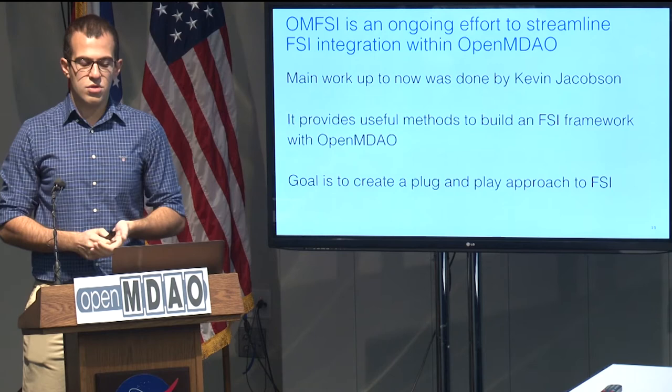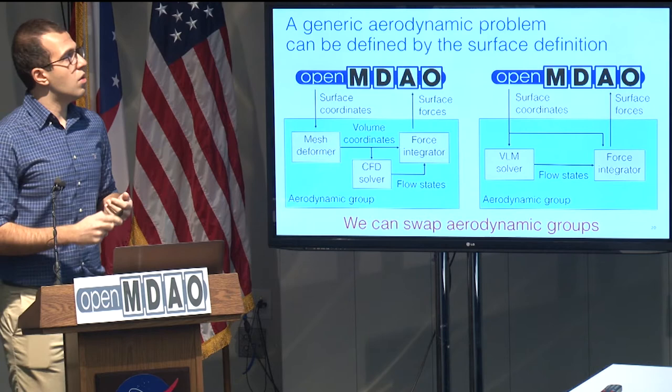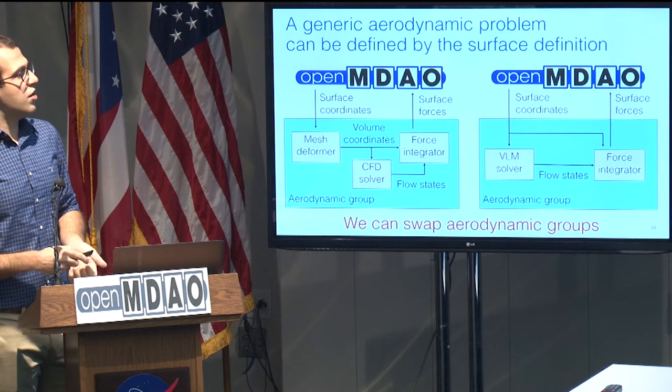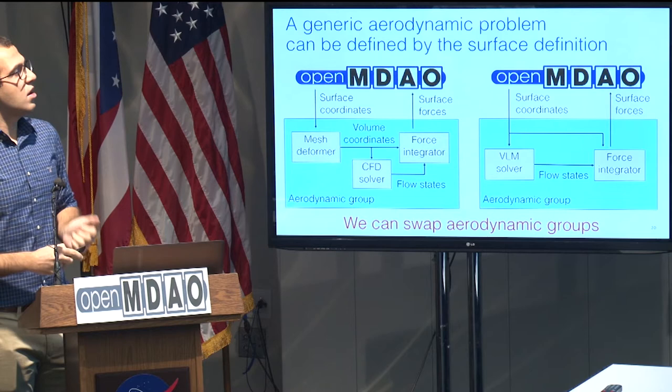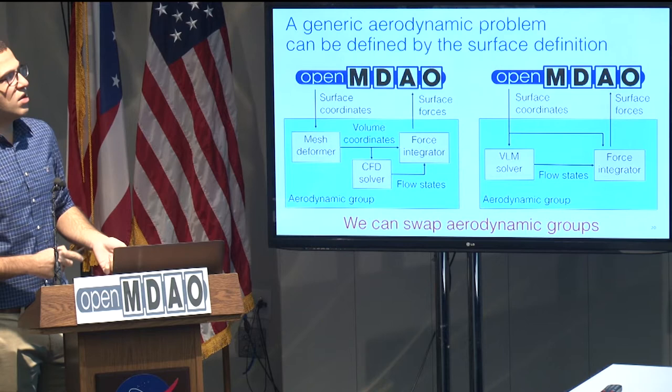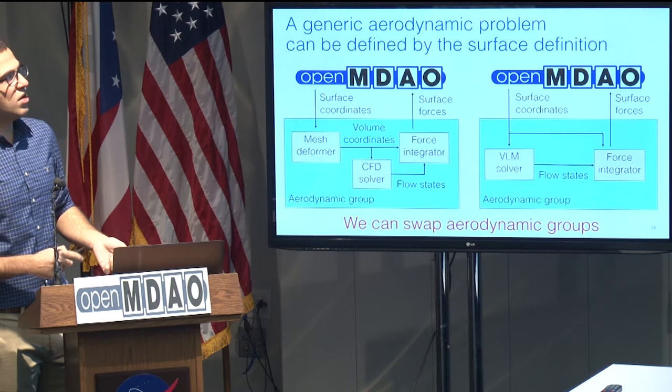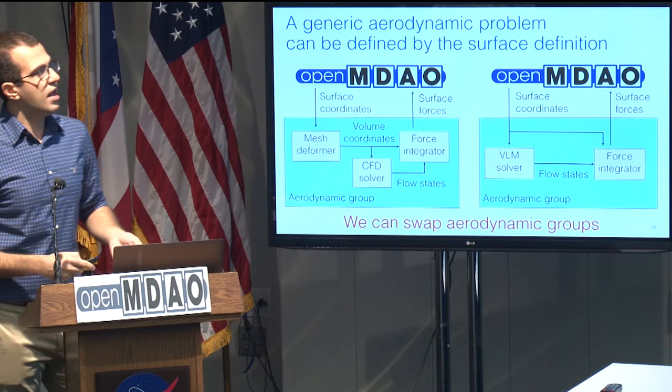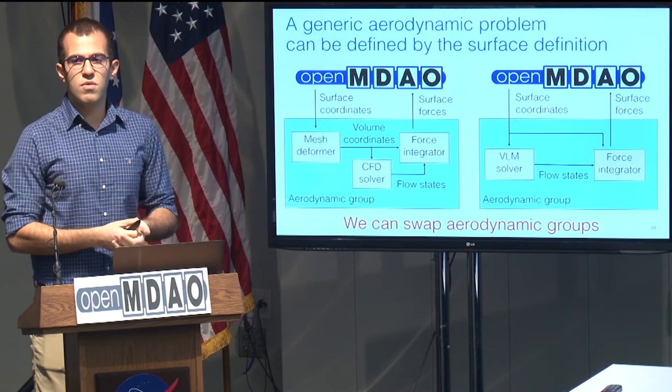The tool provides useful methods to build an FSI framework with OpenMDAO, and the goal is to create a plug-and-play approach to FSI. For example, a generic aerodynamic problem can be defined by the surface definition. On the OpenMDAO level, it passes surface coordinates to our aerodynamic group. We can have two different solvers that use the same interface — on the left, a RANS or Euler code that uses a volume mesh, or on the right, a VLM solver that still uses the same interface. This plug-and-play approach will also enable multi-fidelity optimization in the future.